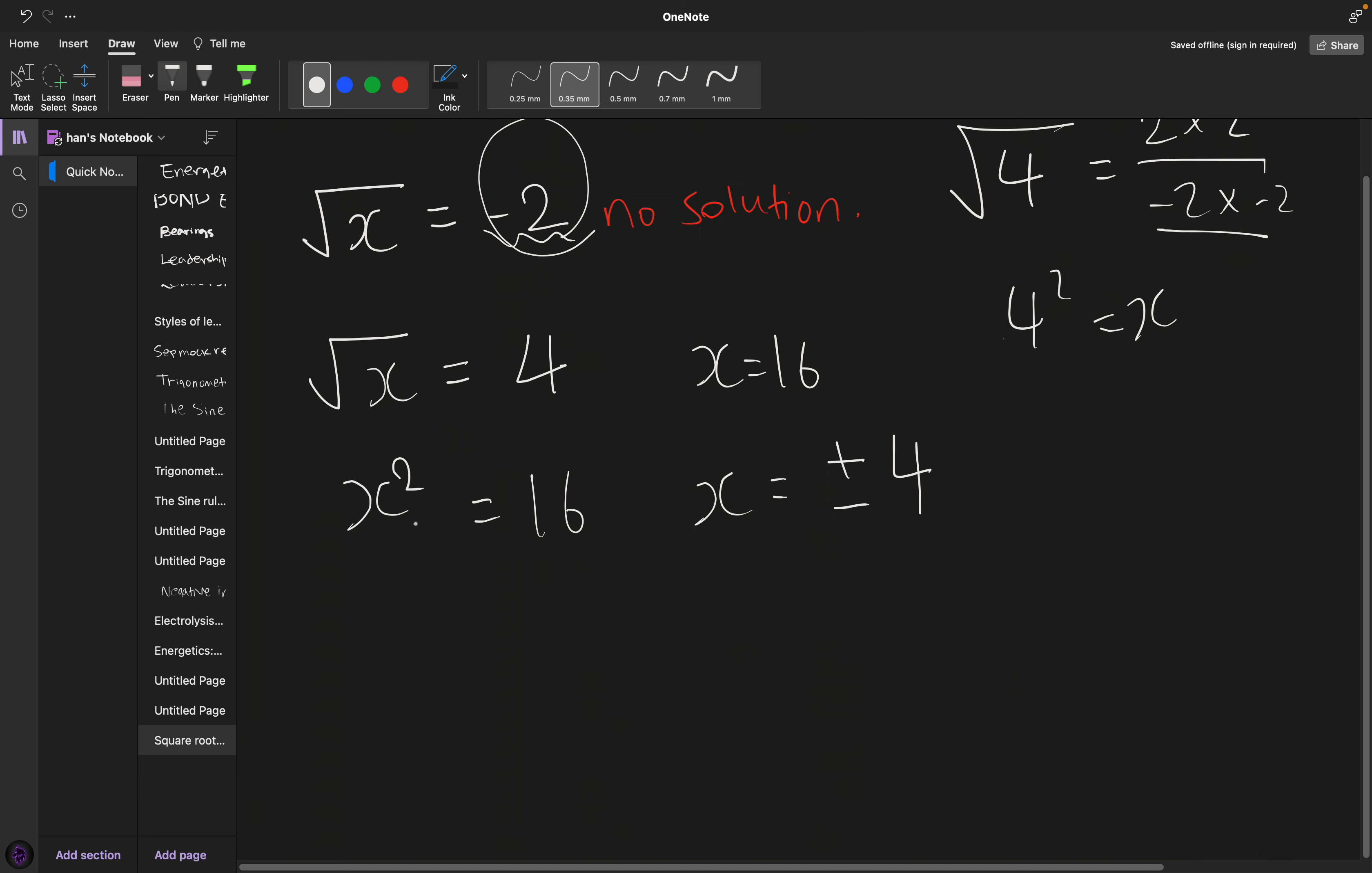x squared is 16. That means two numbers multiplied together is 16, which is basically saying the root of 16. Two numbers that multiply to make 16 - that'll be plus and minus 4. Because 4 times 4 makes 16, and negative 4 times negative 4 makes 16.